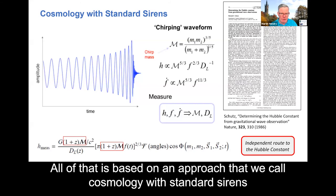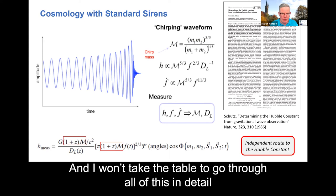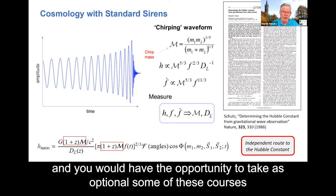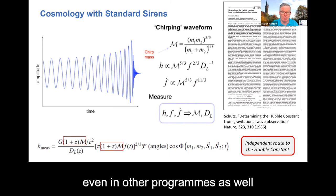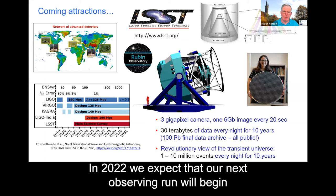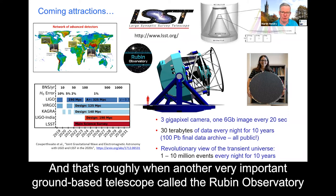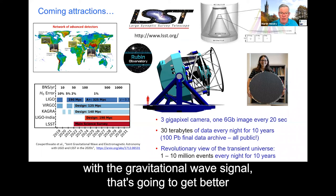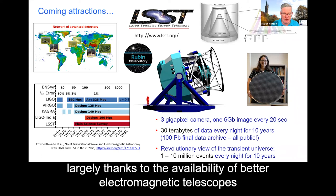All of that is based on an approach that we call cosmology with standard sirens. And again, I won't take the time to go through all of this in detail, but these are all topics that underpin the courses that you would learn about in the astrophysics and theoretical physics MSC. And you would indeed have the opportunity to take as optional some of these courses even in the other programs as well. In 2022, we expect that our next observing run will begin. And that's roughly when another very important ground-based telescope called the Rubin Observatory will begin operations too. So this process of associating an electromagnetic counterpart with a gravitational wave signal, that's going to get better and largely thanks to the availability of better electromagnetic telescopes.